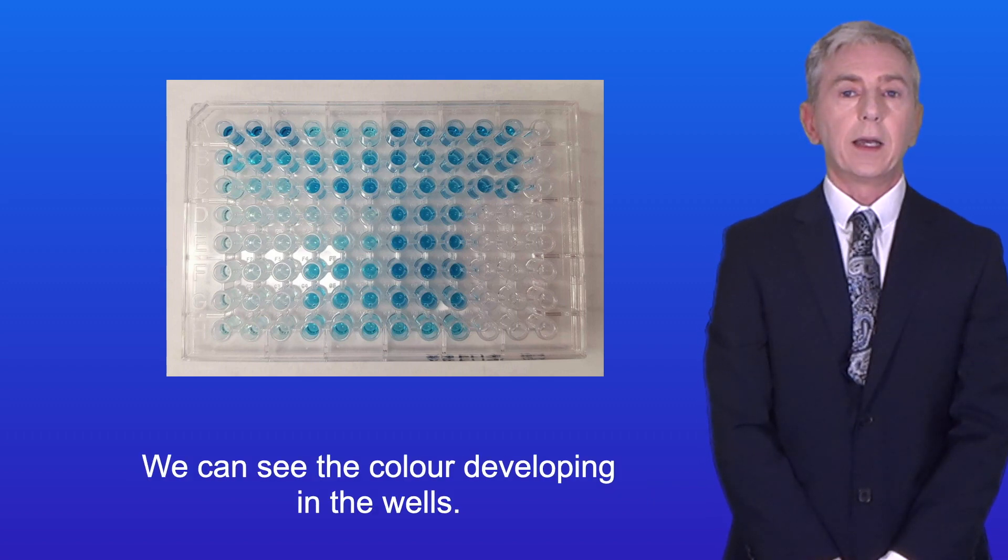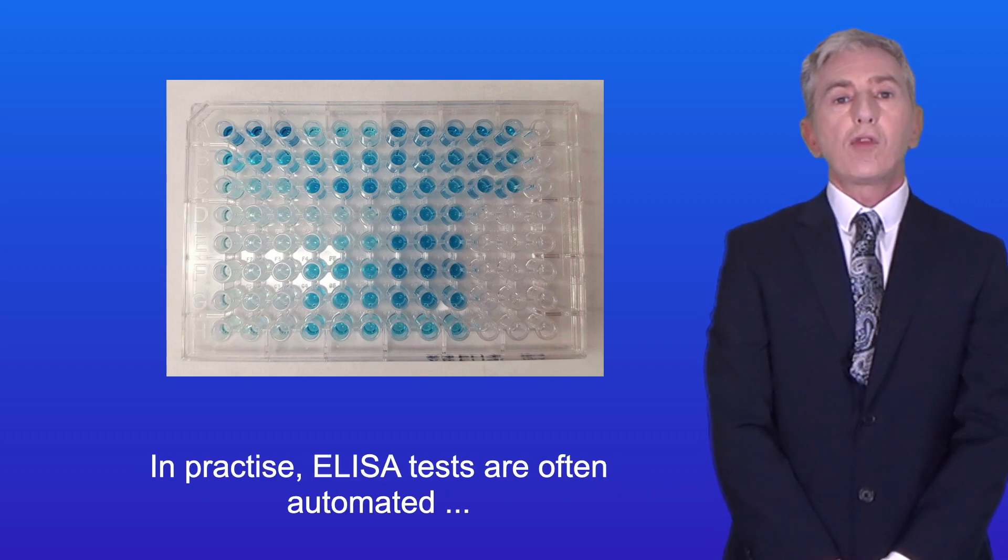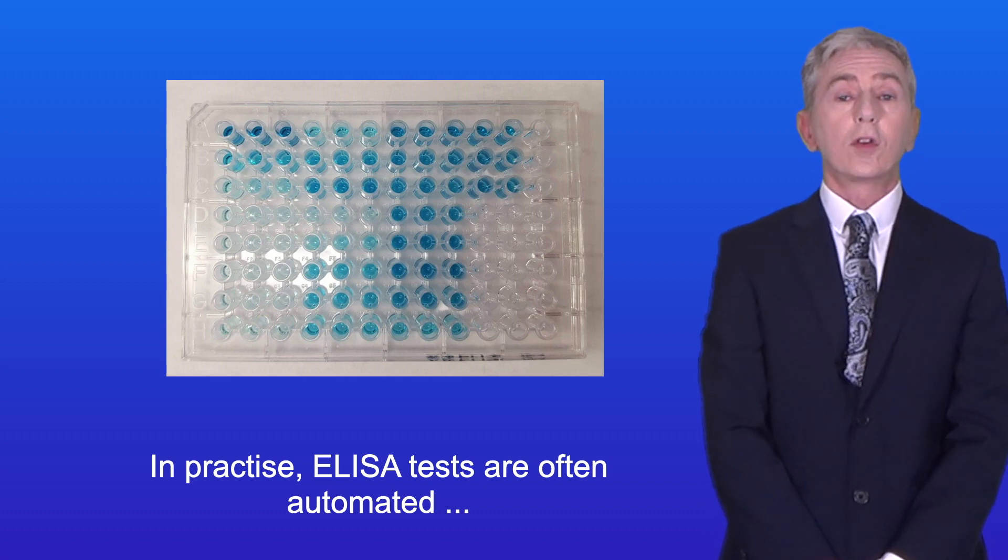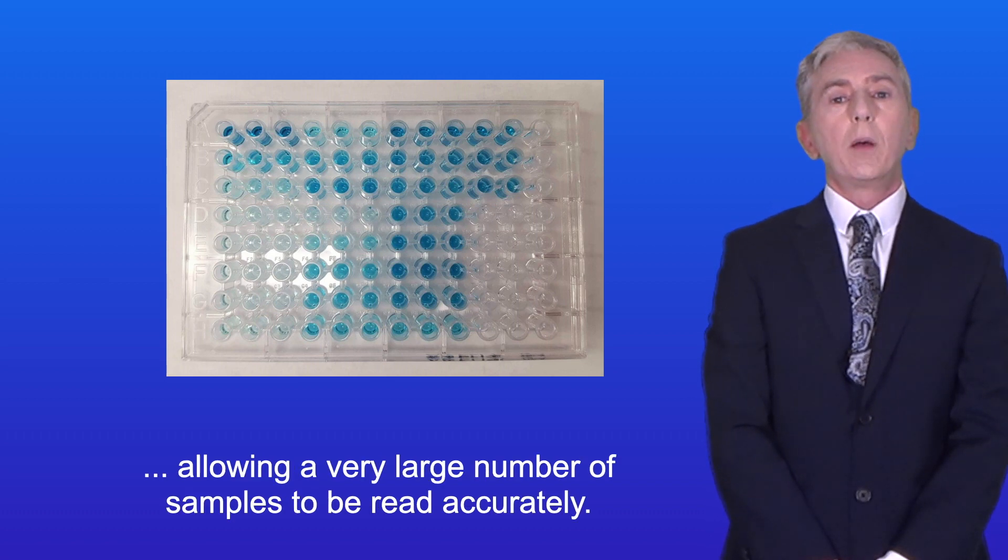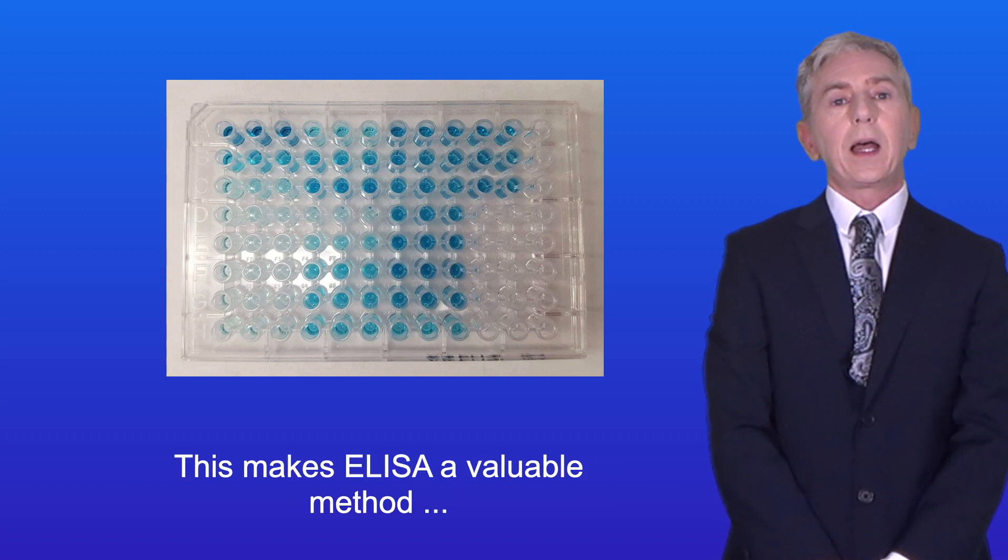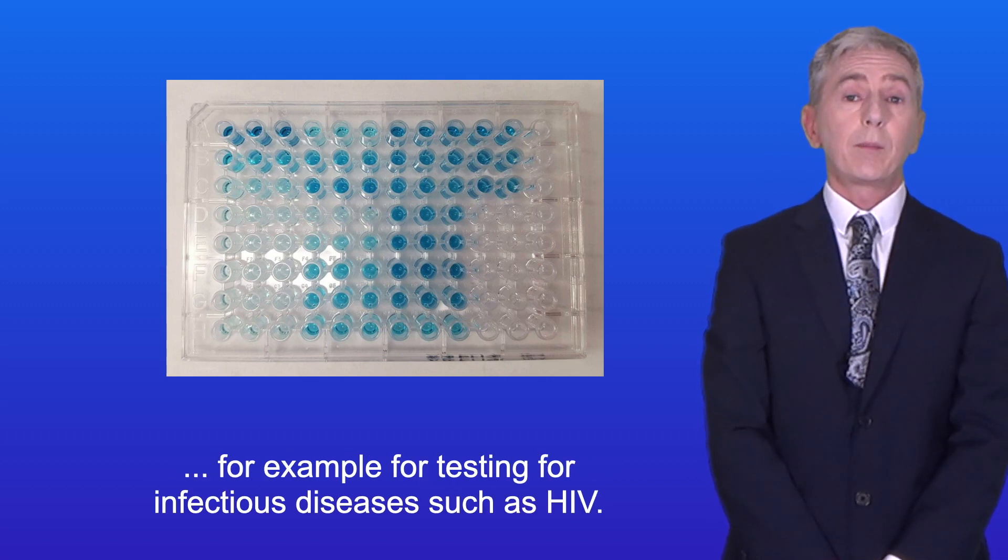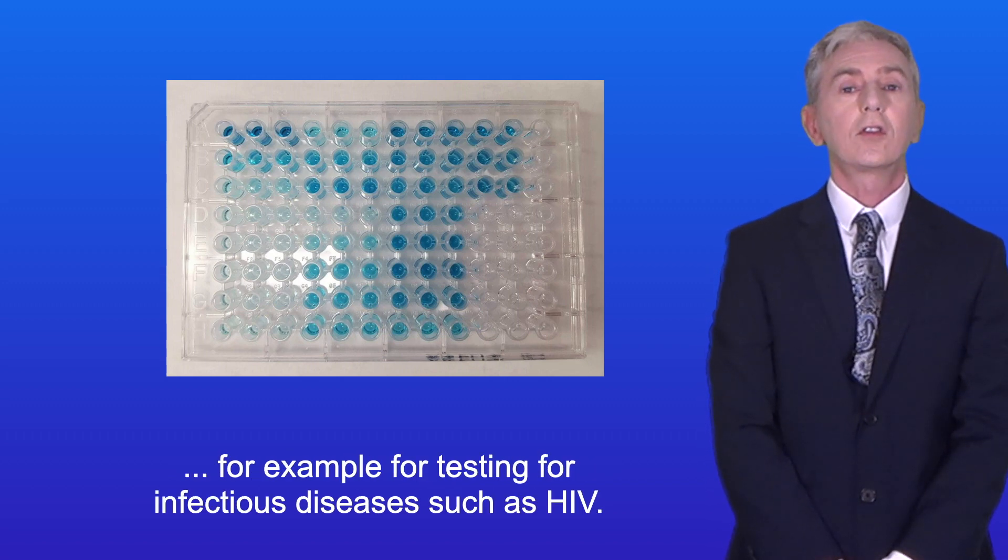I'm showing you an ELISA plate here, and we can see the color developing in the wells. Now in practice, ELISA tests are often automated, allowing a very large number of samples to be read accurately. This makes ELISA a valuable method, for example for testing for infectious diseases such as HIV.